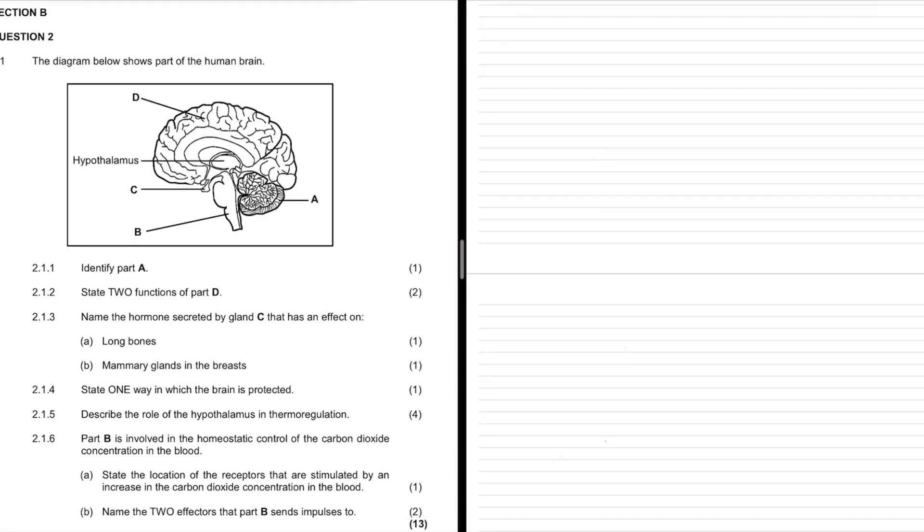We are in Section B, Question 2. The diagram shows parts of the human brain. You can see the hemisphere is cut in half. It would be beneficial to label the parts before you start the question.